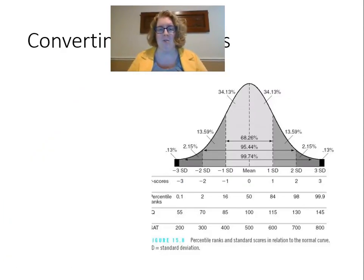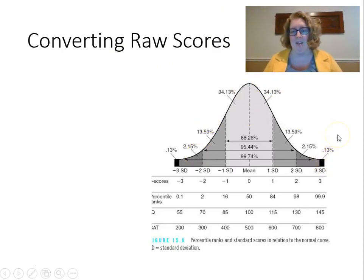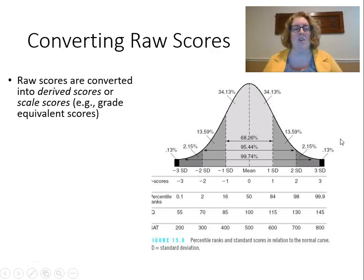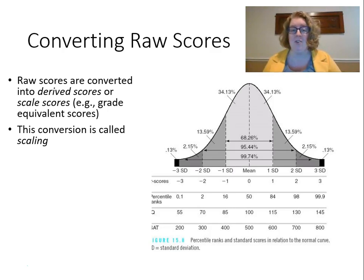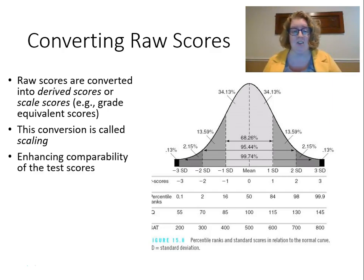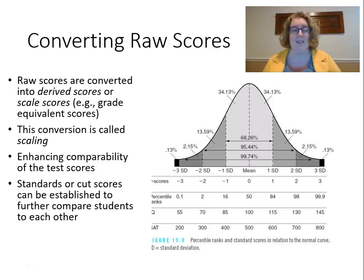Let's talk about converting raw scores. Raw scores are converted into derived scores or scaled scores. We talked about raw scores in our last lecture — we can't really interpret those raw scores, so instead we convert them into derived or scaled scores. This is scaling, and it's what statisticians and psychometricians do, so we don't have to do this process. This enhances the comparability of test scores so we can compare across grades and ages, and we can establish cut scores or standards to compare students to each other.